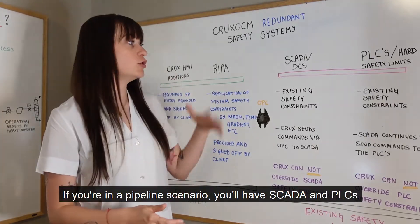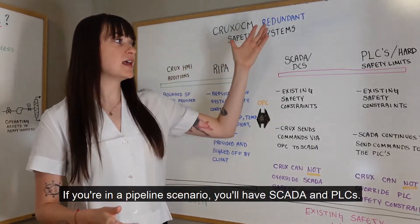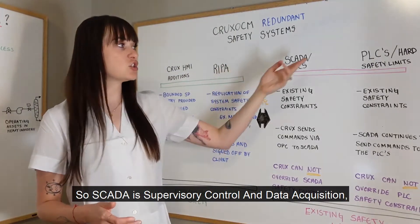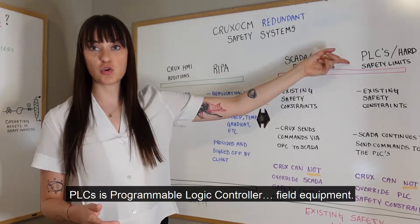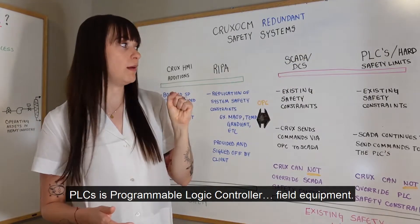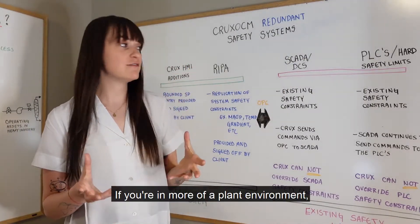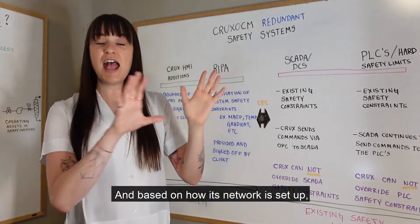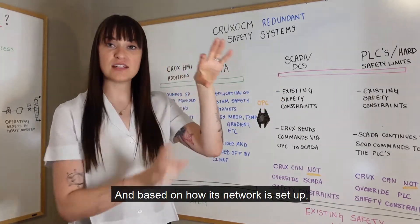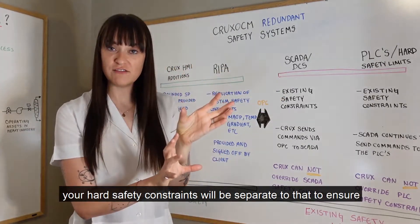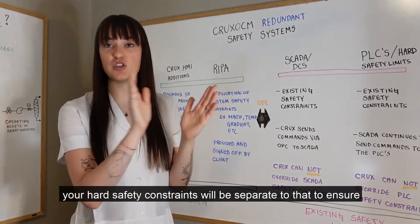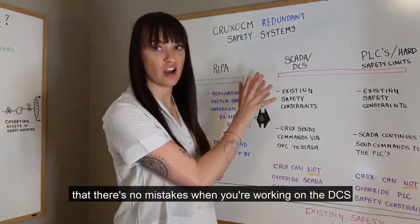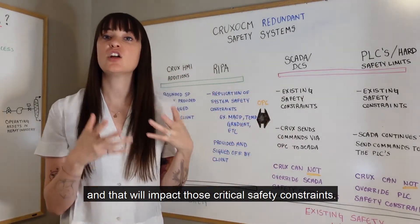In a pipeline scenario you'll have SCADA — supervisory control and data acquisition — and PLCs, programmable logic controllers, out on the field equipment. In a plant environment you'll have a DCS, distributed control system. Based on how it's networked and set up, your hard safety constraints will be separate to ensure there are no mistakes when working on the DCS that could impact those critical safety constraints.